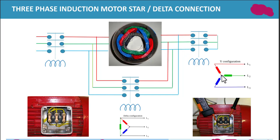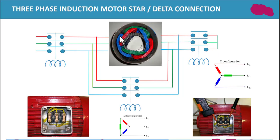In the star connection, one side is common — three phases are connected through a wire in a shorted condition. This is the common point, connected through the red line to L1. The green line is connected to L2, and the third phase — the blue coil — is connected with L3. When this contactor and this connector are closed, the motor will run in star connection.